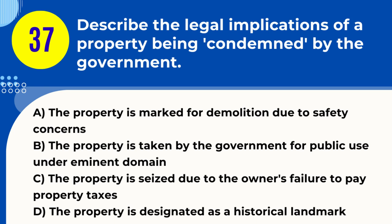Question 37. Describe the legal implications of a property being condemned by the government. A. The property is marked for demolition due to safety concerns. B. The property is taken by the government for public use under eminent domain. C. The property is seized due to the owner's failure to pay property taxes. D. The property is designated as a historical landmark. Answer: B. Explanation. When a property is condemned by the government, it is typically taken under the power of eminent domain for public use, such as building roads or schools. The property owner is usually entitled to fair compensation for the loss of their property.